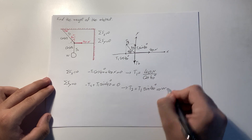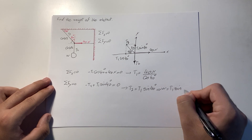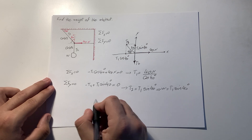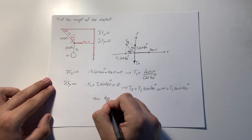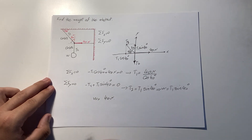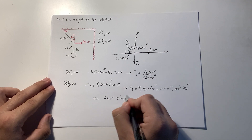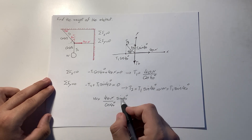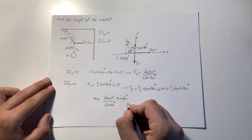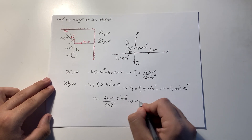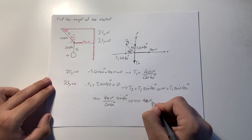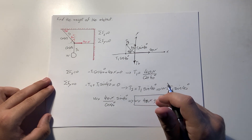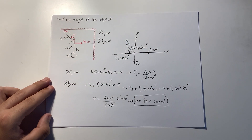So we can say W equals T1 sine of 40 degrees. Plugging in T1, we get W equals 40 Newtons times sine of 40 degrees divided by cosine of 40 degrees. From trigonometry, sine over cosine equals tangent, so W equals 40 Newtons times tangent of 40 degrees. That is the weight of this object.